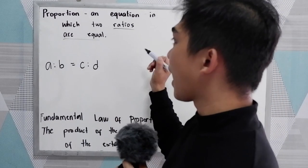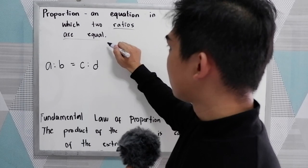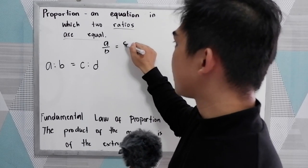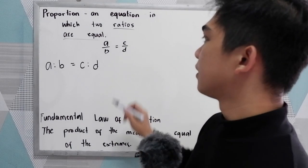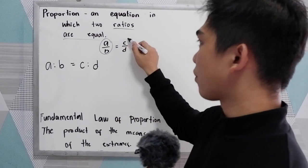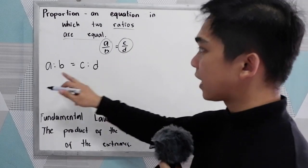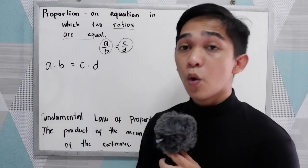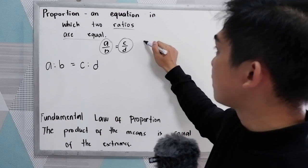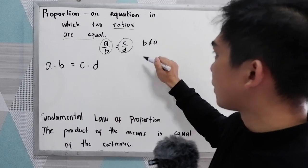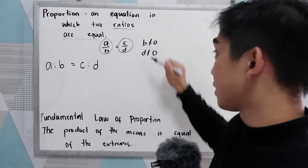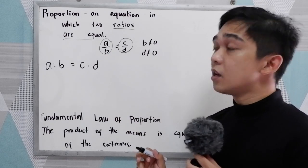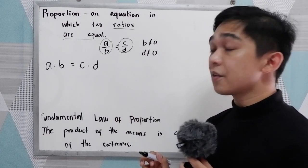So let's say we have A over B is equal to C over D. That can also be written as A is to B is equal to C is to D, wherein B is not equal to 0 and D is not equal to 0. If B and D are 0, it will give us undefined.